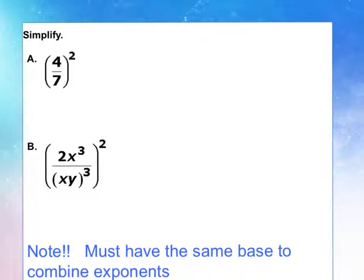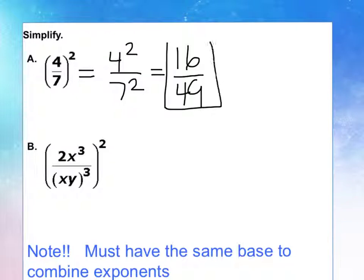Here are two examples to practice the concept. So we have 4 7ths to the square power, which would be 4 squared over 7 squared. 4 squared is 16, 7 squared is 49. And this is as simple as we can get it, and we're finished with part A.